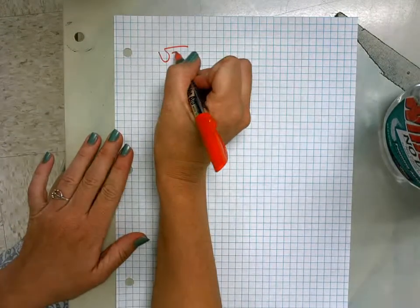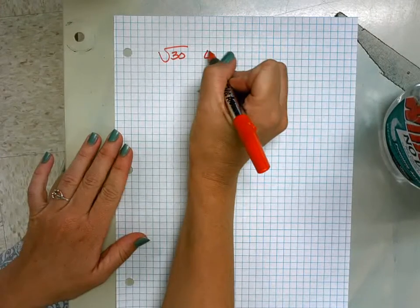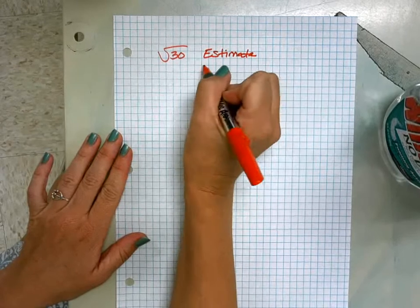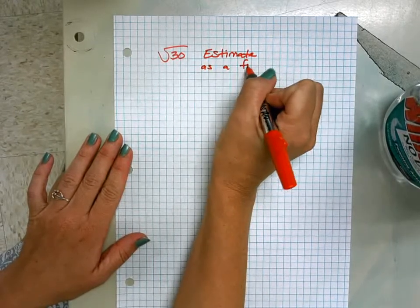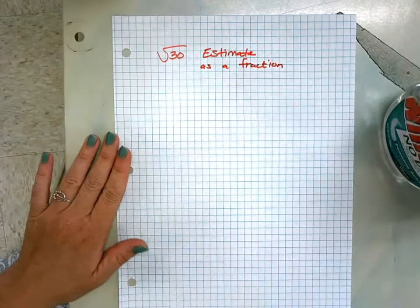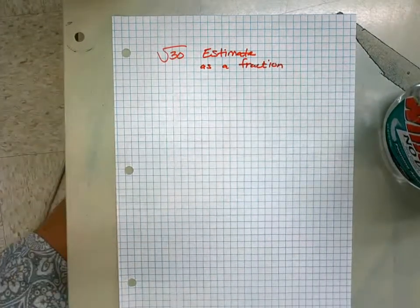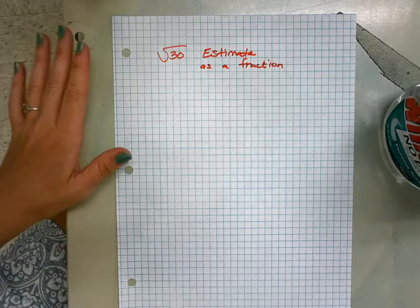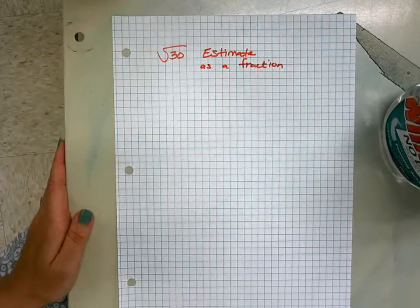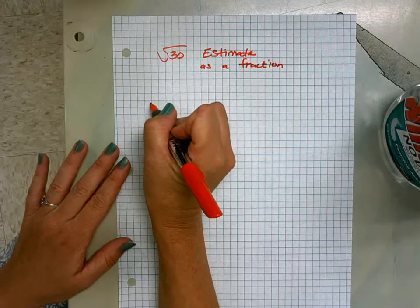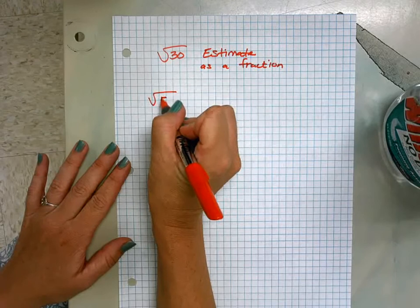So this problem has been on the board for about a week now and I've been asking can you estimate the square root of 30 as a fraction and we're going to talk this week about why that's an irrational number and the difference between rational and irrational numbers. So let's go ahead and look at a different example since this is the one that you'll hopefully be able to show me on Friday. Let's look at something like the square root of 53.